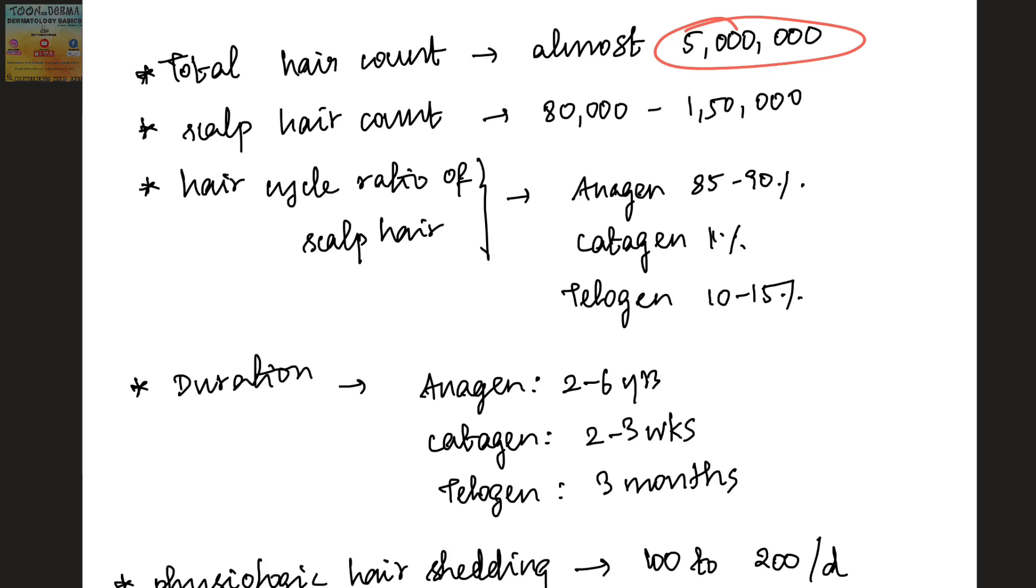The hair cycle ratio of scalp hair at any point: 90% of hairs will be in anagen phase, 1% in catagen, and 10 to 15% in telogen phase. The duration: anagen phase lasts for about 2 to 6 years, catagen phase about 2 to 3 weeks, and telogen phase for 3 months.